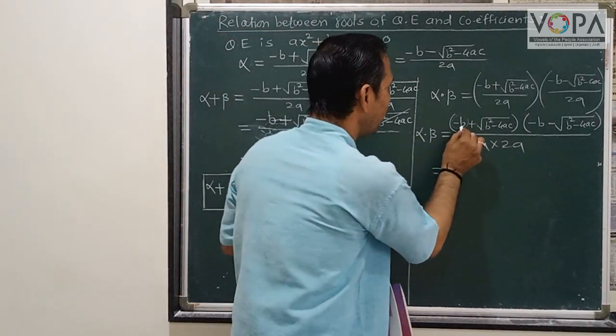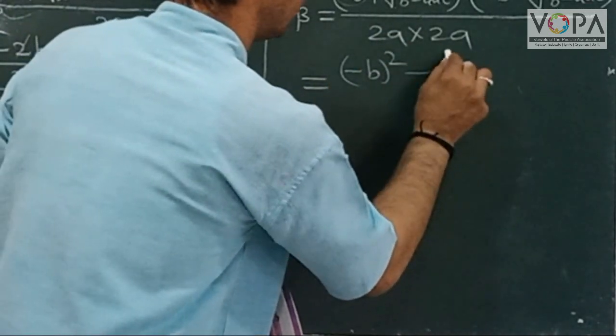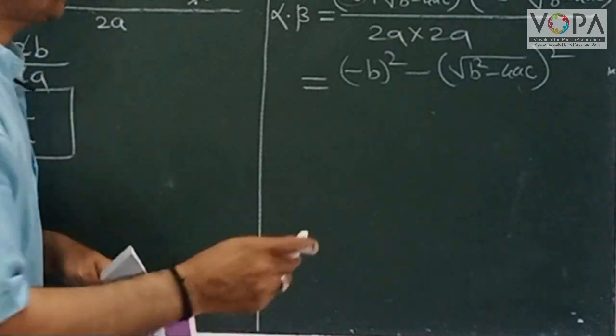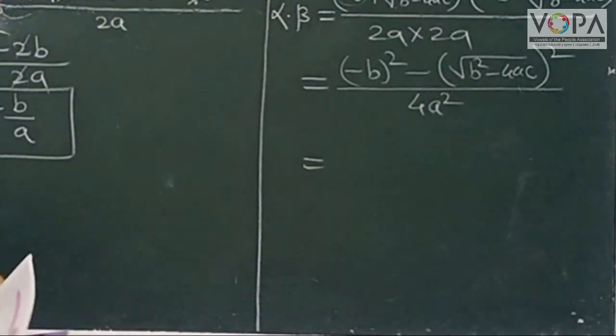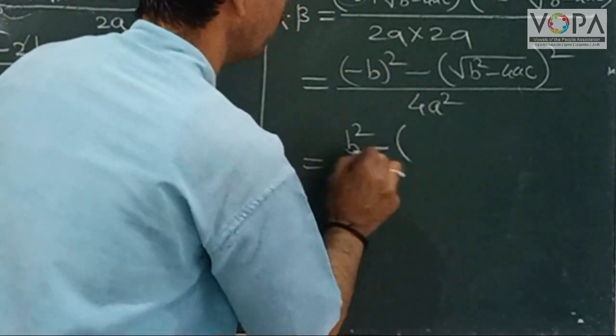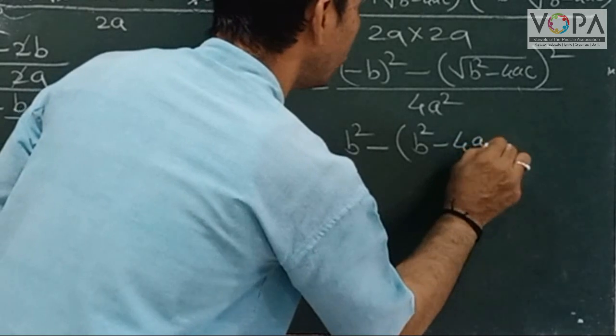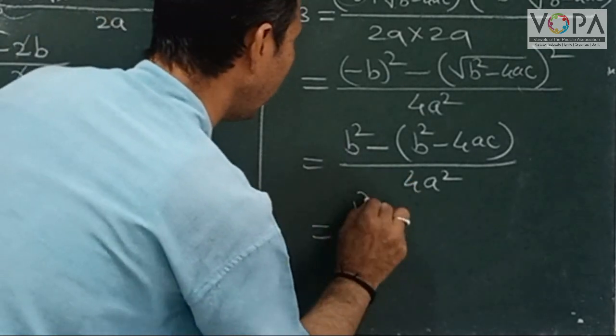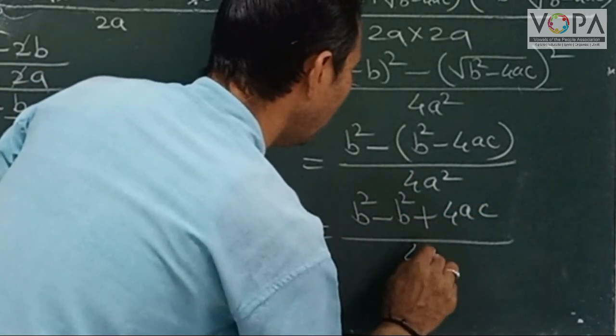I multiply 2a × 2a = 4a². In the first bracket: -b + √(b²-4ac), and the other bracket: -b - √(b²-4ac). Notice: a² - b², where a² is (-b)², and b² is the term √(b²-4ac) which we must square. Look: (a² - b²) divided by 4a² equals... In the numerator (-b)² equals b². This square root, when squared, disappears, leaving just b² - 4ac, all divided by 4a².